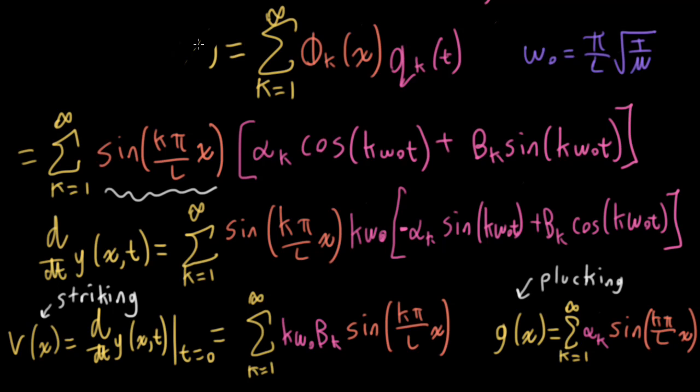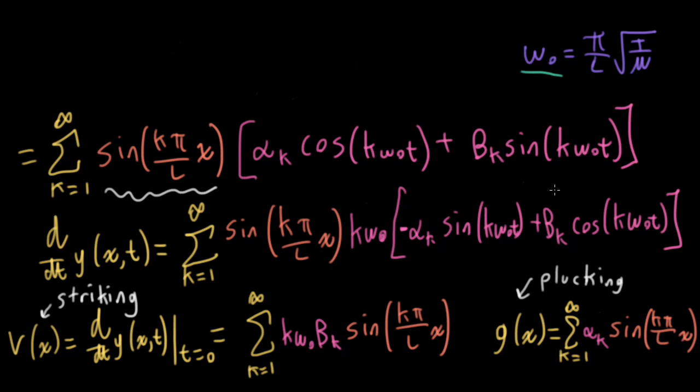One more thing before we close out — I should have mentioned this sooner. Omega_naught is in terms of radians per second. If you want this in terms of hertz, which is what musicians really want to think about, you divide by 2·pi, giving f = 1/(2L) · sqrt(T/mu) in hertz.